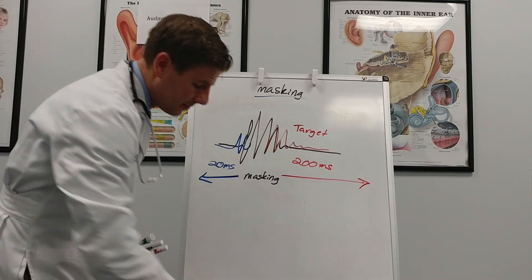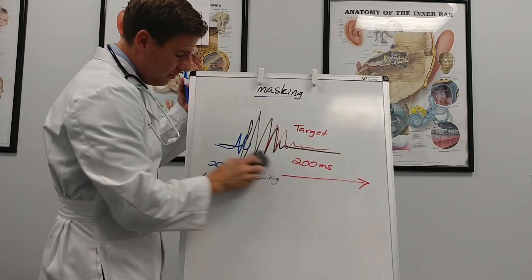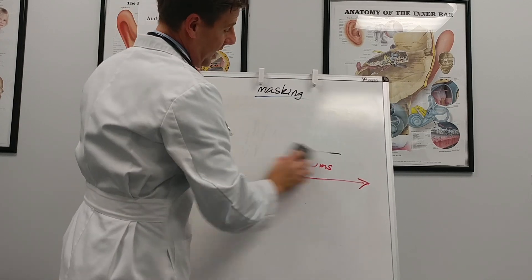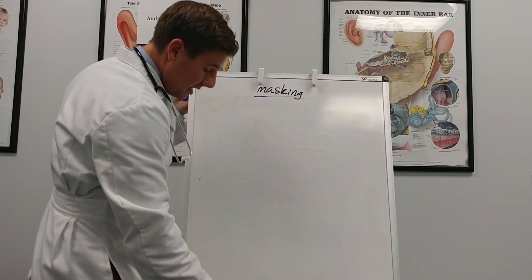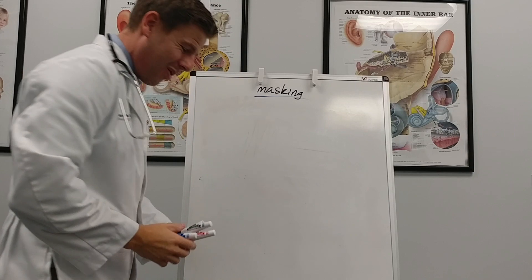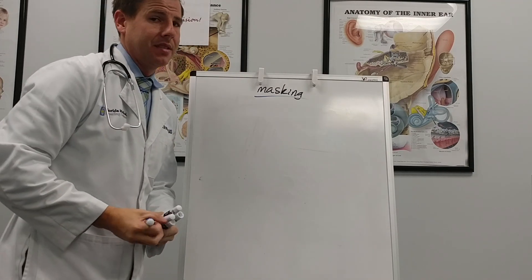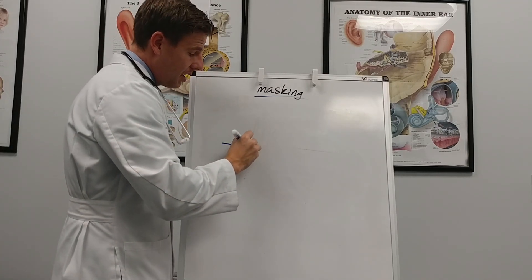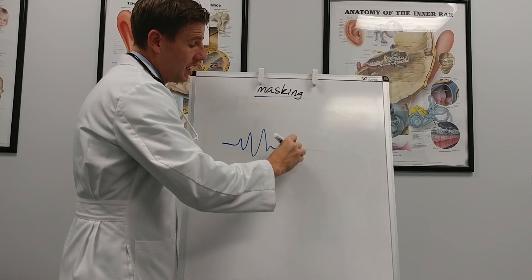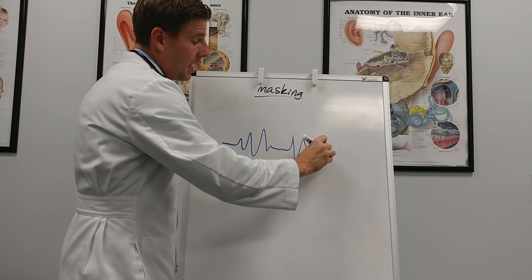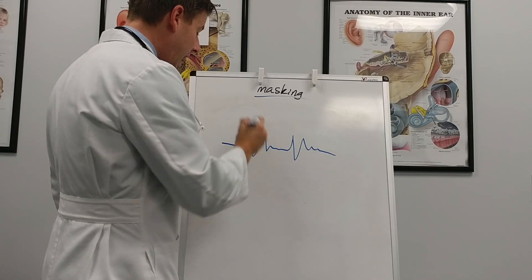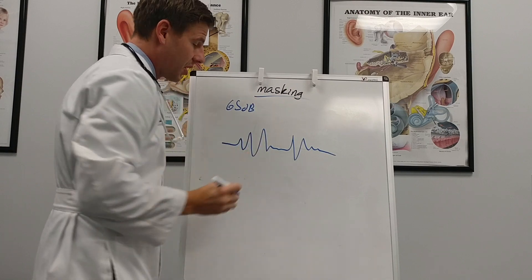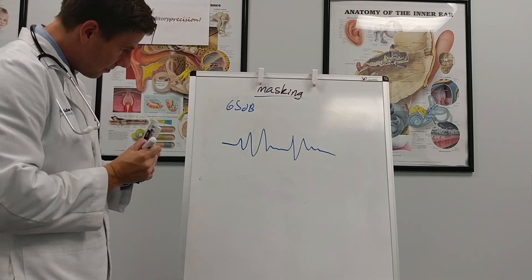So because of non-simultaneous masking, we can have forward masking or backwards masking. That brings us to simultaneous masking, which is a little more common sense. If I'm at a party talking to a friend at a regular volume — 65 decibels is where conversation usually takes place.